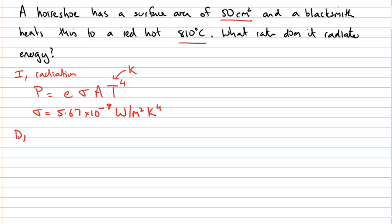So to develop this, I've got my horseshoe as a physical picture. It's going to be radiating in all these directions. The amount of radiation depends upon the area of the object and the temperature.